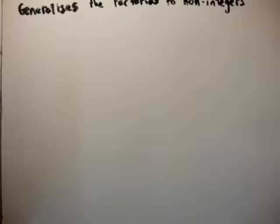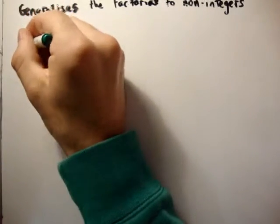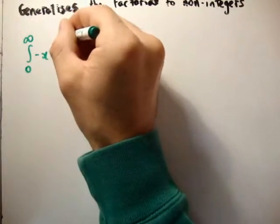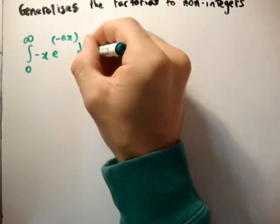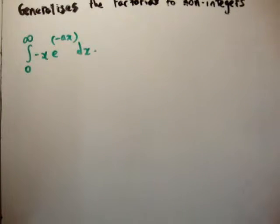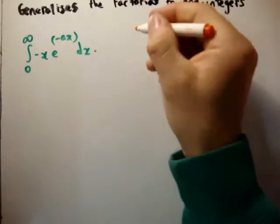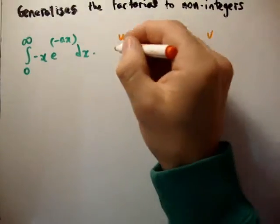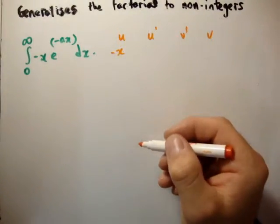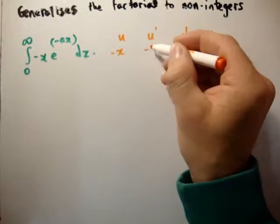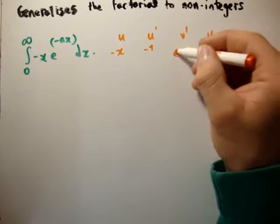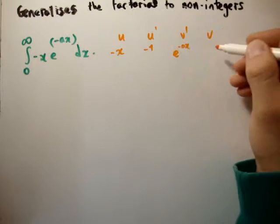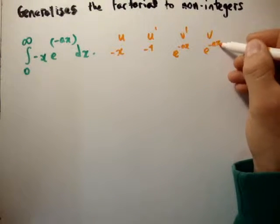Let's start with the integrals themselves. The first integral we had was the integral from 0 to infinity of x times e to the minus ax, integrated dx. I'm going to assume you're familiar with integration by parts. So I'll select u as minus x — differentiate that with respect to x, you get minus 1. I'm going to say that v prime is e to the minus ax, and integrate that as e to the minus ax over minus a.